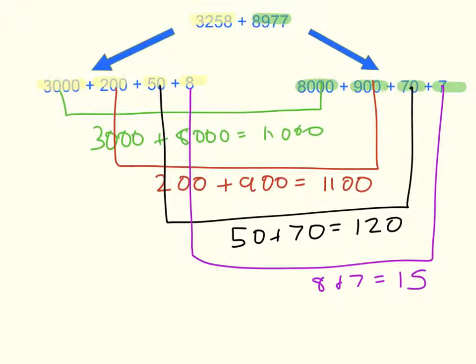Then I took the totals of each place value column: 11,000, 1,100, 120, 15, and added them together.